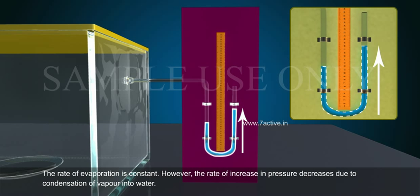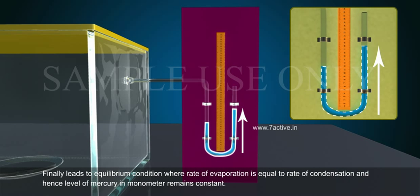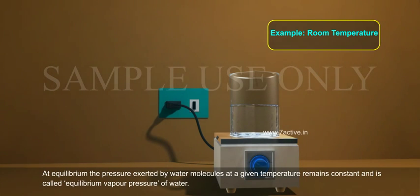The rate of evaporation is constant, however, the rate of increase in pressure decreases due to condensation of vapour into water. Finally, this leads to an equilibrium condition where rate of evaporation is equal to rate of condensation and hence the level of mercury in the manometer remains constant.